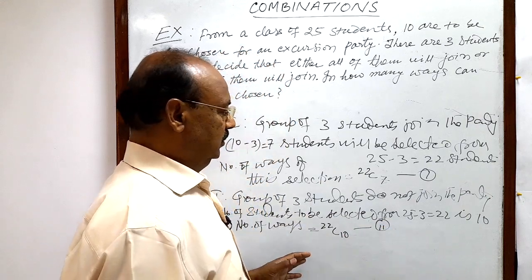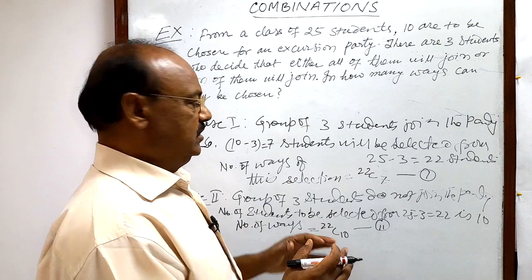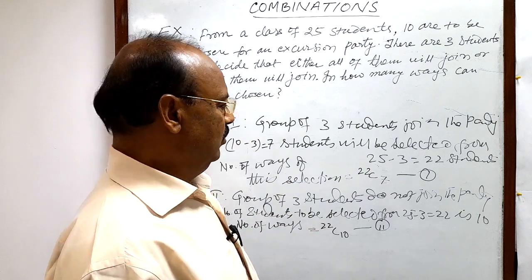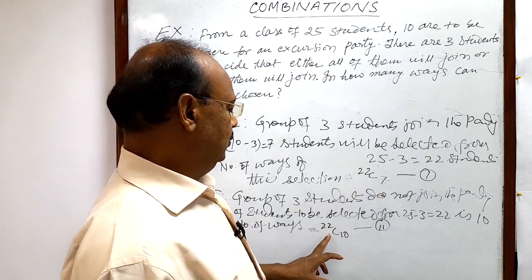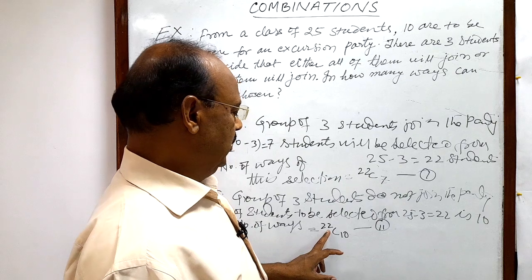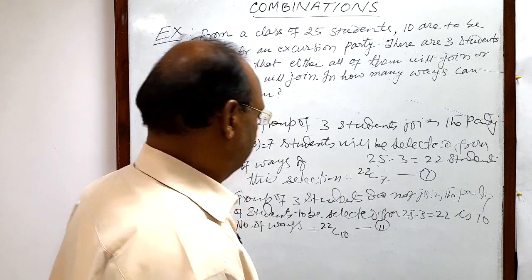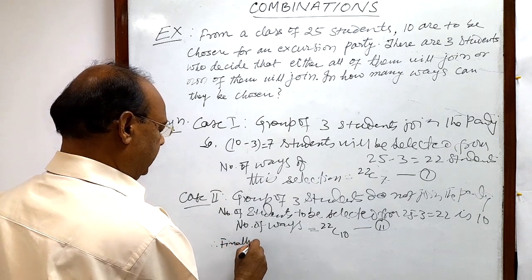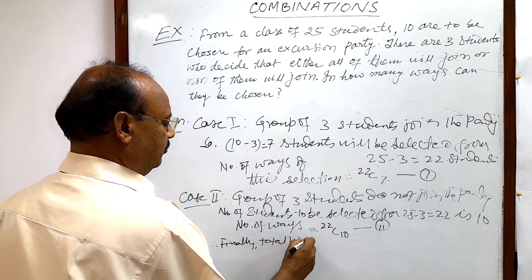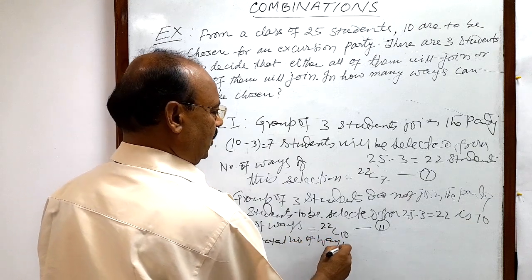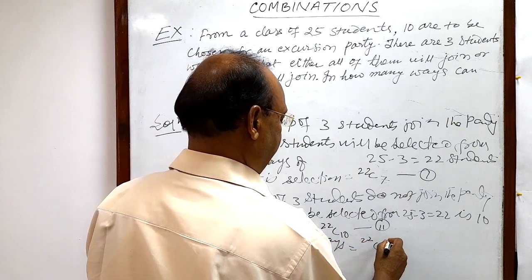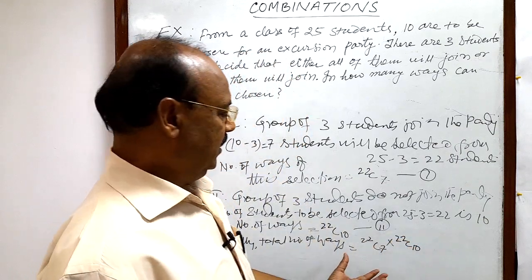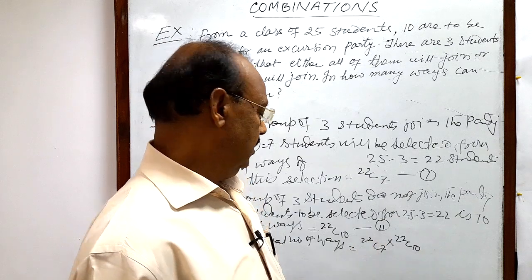Considering both cases together, the total number of ways will be equal to 22C7 plus 22C10. Therefore, the total number of ways is 22C7 plus 22C10, and after calculating this we will get the result.